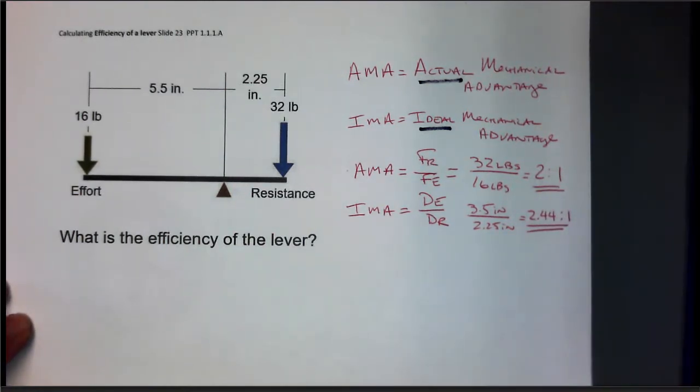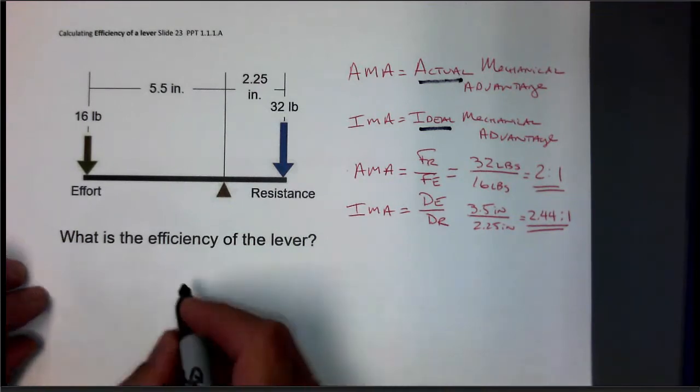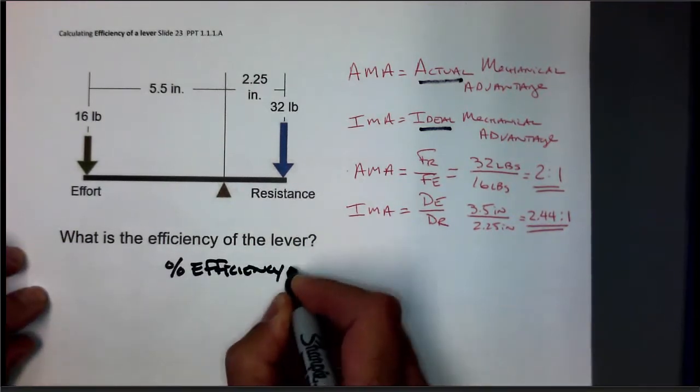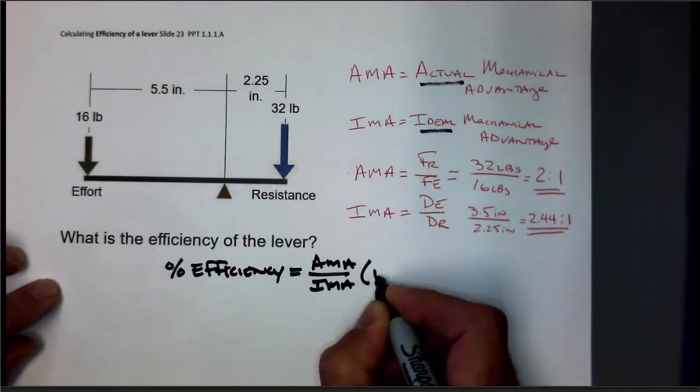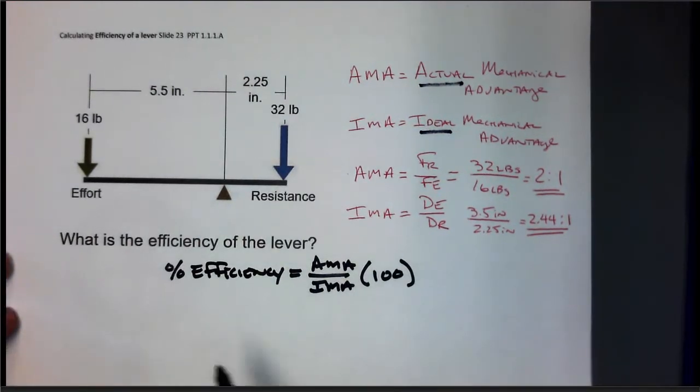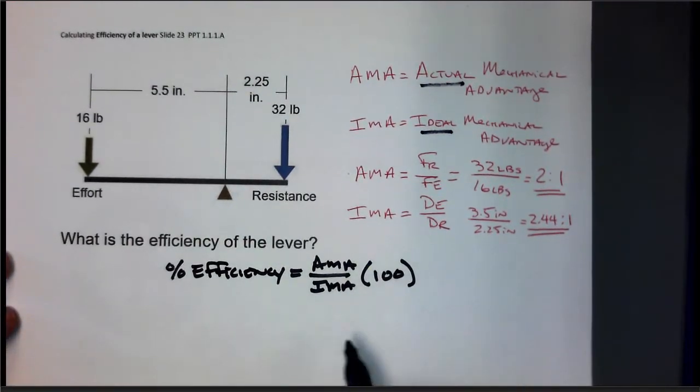So the efficiency, the equation you're going to use is this. Percent efficiency equals AMA over IMA times 100. So it's that simple. Here's the math to prove it.